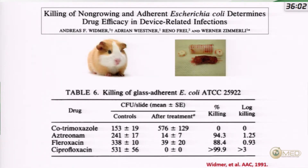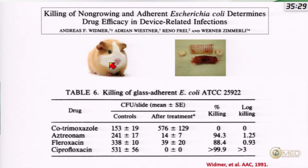A classical study by Zimmerli and collaborators using the guinea pig model demonstrated that animals treated with ciprofloxacin achieved 100% cure, whereas animals treated with cotrimoxazole had no cures. So cotrimoxazole is not a good option for biofilm-associated gram-negative infections, at least as first-line therapy. Summarizing, for me the definition of multidrug resistance in bone and joint infection is essentially ciprofloxacin resistance. Once you are beyond ciprofloxacin resistance, the prognosis is very poor and you need alternatives other than beta-lactams or cotrimoxazole.